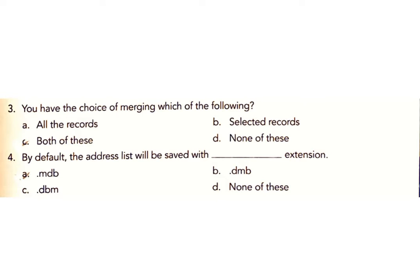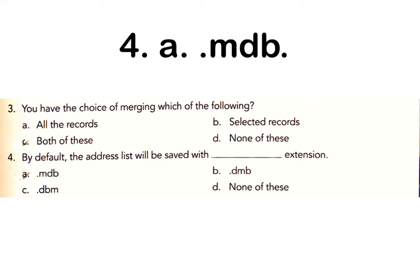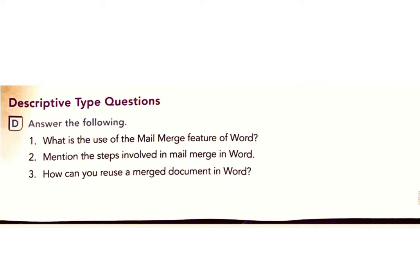D: By default, the address list will be saved with which extension? Options: A) .mdb, B) .dmb, C) .dbm, D) None of these. Answer: A) .mdb.